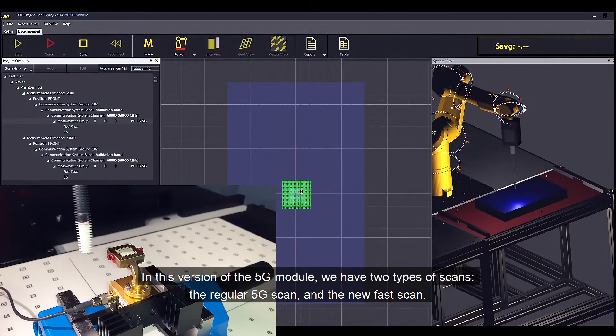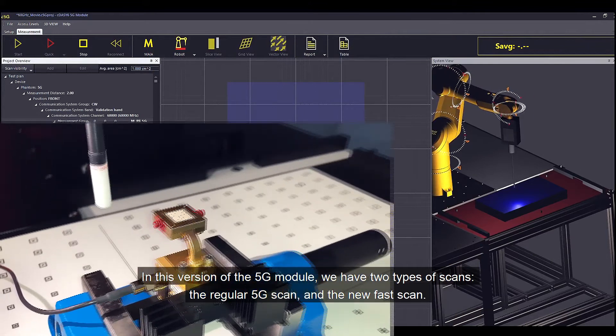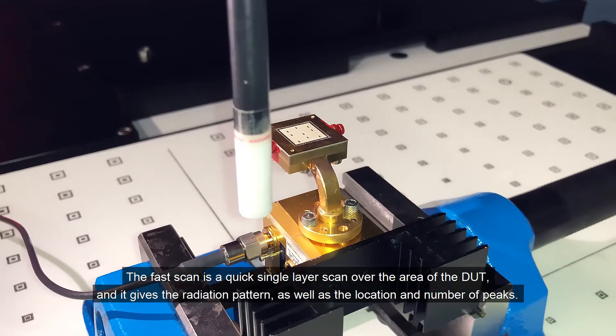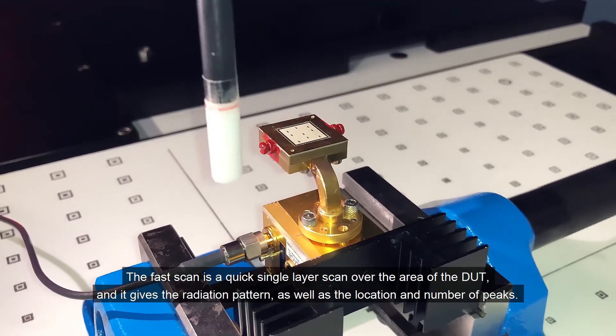In this version of 5G module, we have two types of scans. The regular 5G scan and the new fast scan. The fast scan is a quick single layer scan over the area of the DUT and it gives the radiation pattern as well as the location and number of peaks.